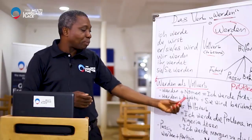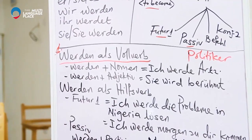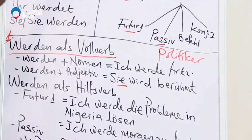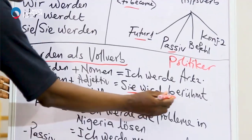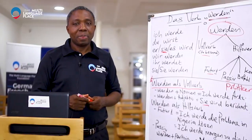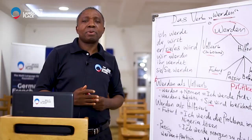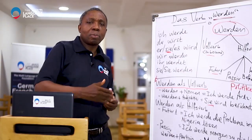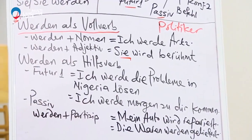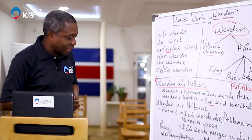The second one is werden plus adjective — the verb werden with an adjective. Sie wird berühmt. Berühmt means popular. She's not yet popular, but she wants to become popular — she desires to become popular. Sie wird berühmt.